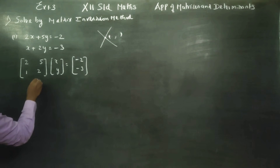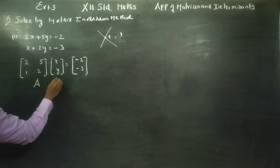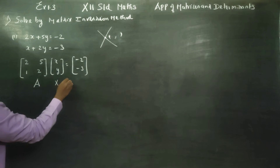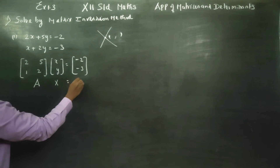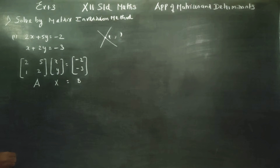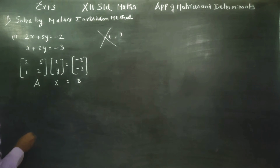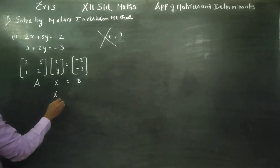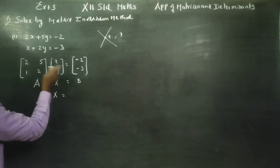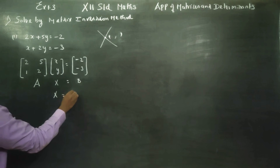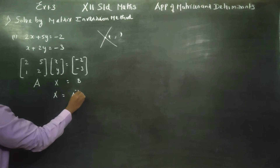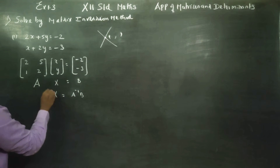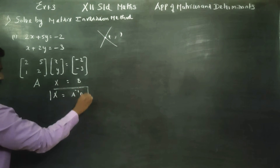Then, name the coefficient matrix A, variable matrix X, and constant matrix B. So AX = B. Therefore X = A⁻¹B. This is the matrix inversion formula.